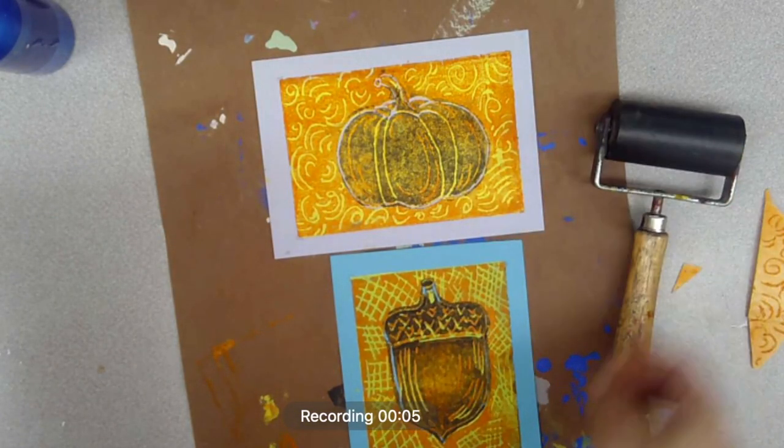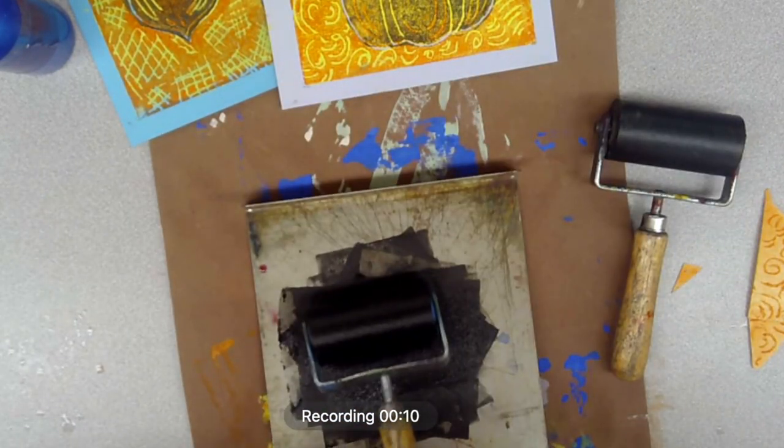Here's another print I made, the little pumpkin. Same process as the acorn, just a little different style, a little different colored paper underneath.